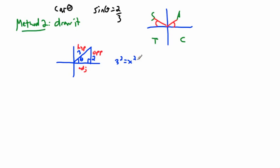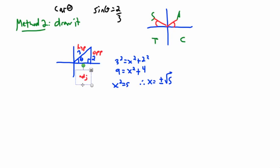Now that we know the adjacent side is root 5, we can find cos theta. Cosine is adjacent over hypotenuse, so in the first quadrant, cos theta equals root 5 over 3. That's the answer for this quadrant. But remember, there were two possible quadrants.